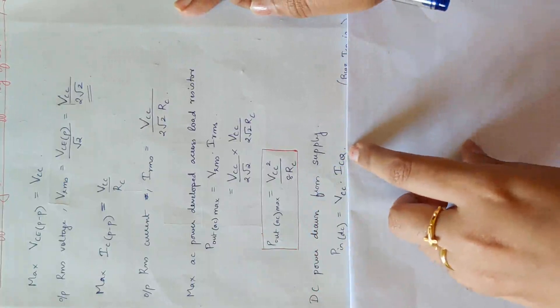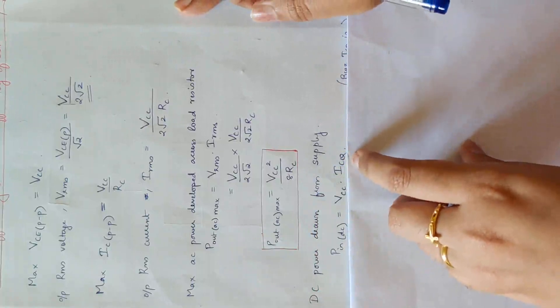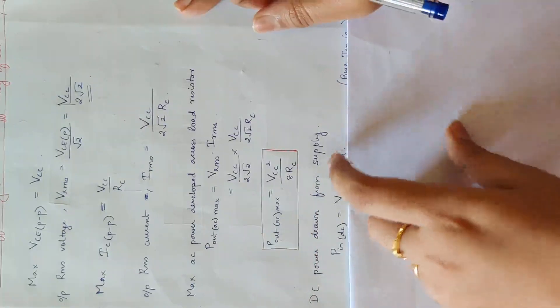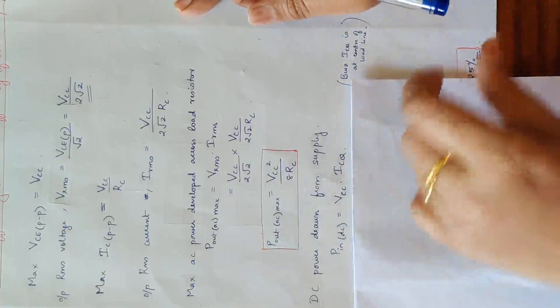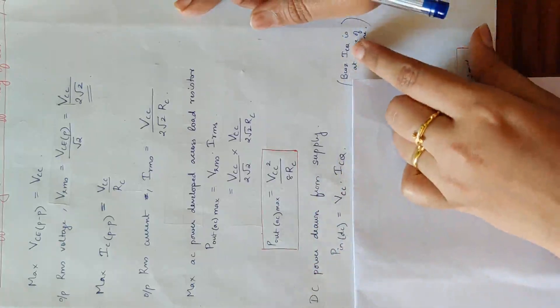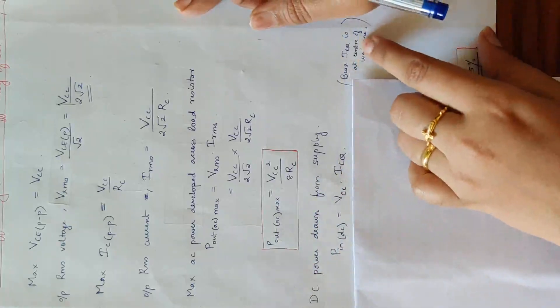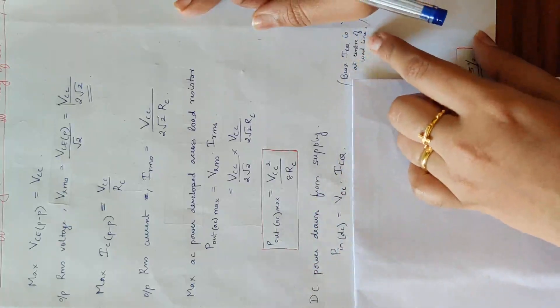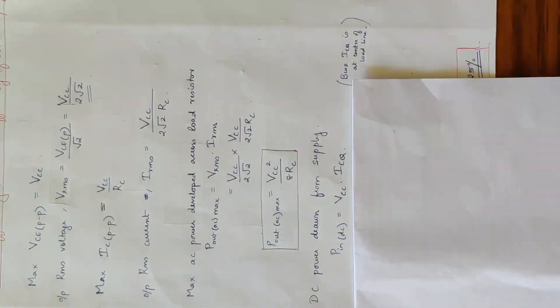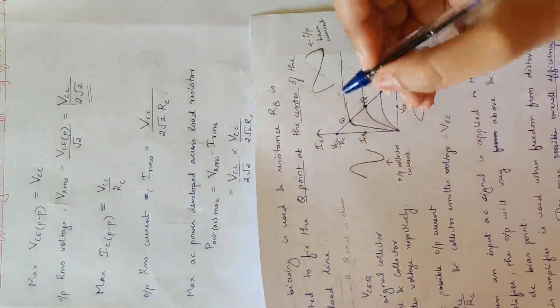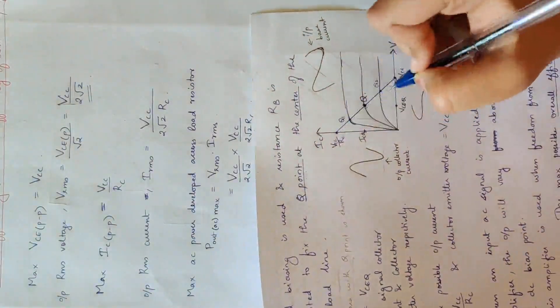ICQ is the collector current at the Q point. Looking at the figure, we identify the Q point at the center of the DC load line.